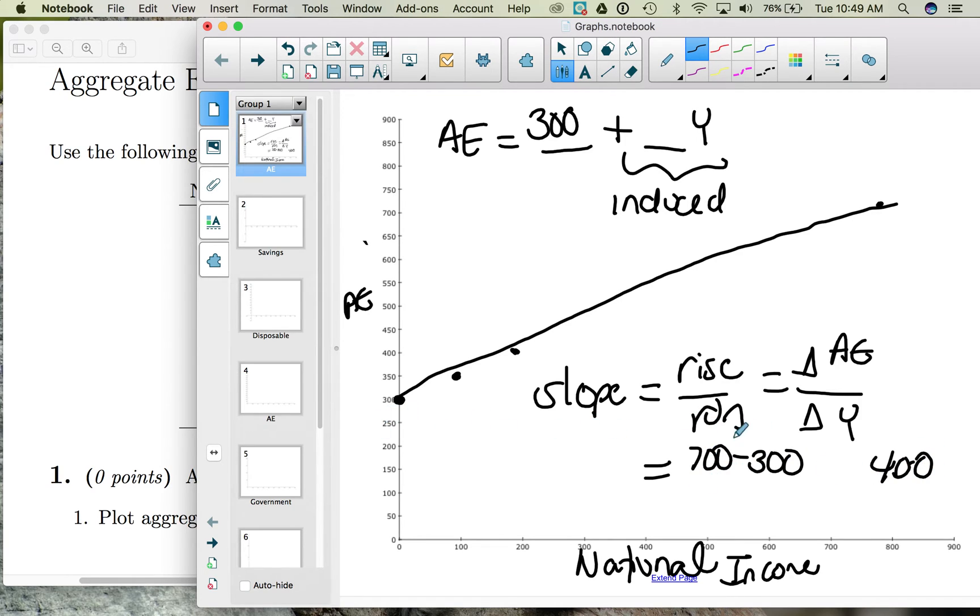The run is the change in national income. So we go from 0 to 800, which is a change of 800. So the slope that we have found is 0.5.